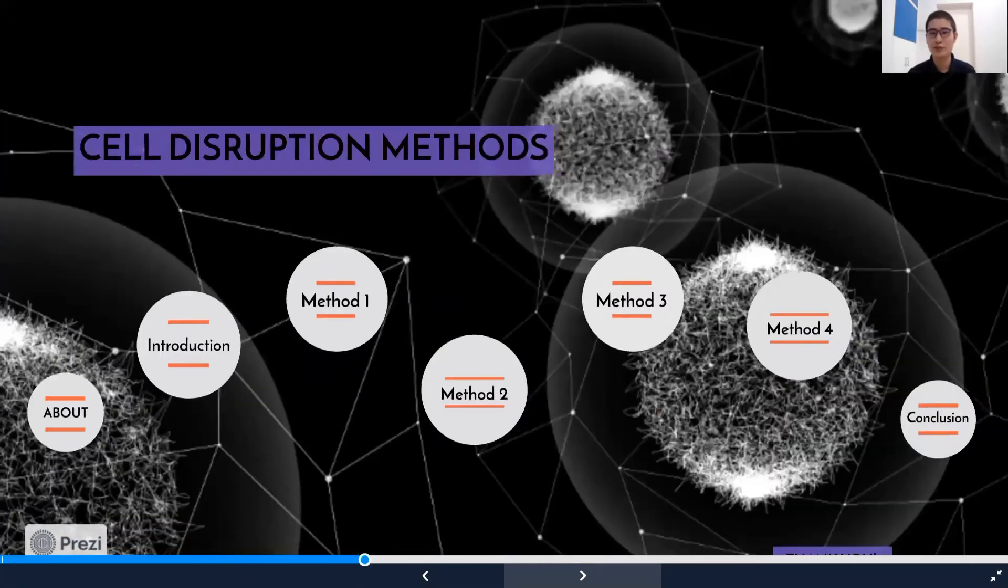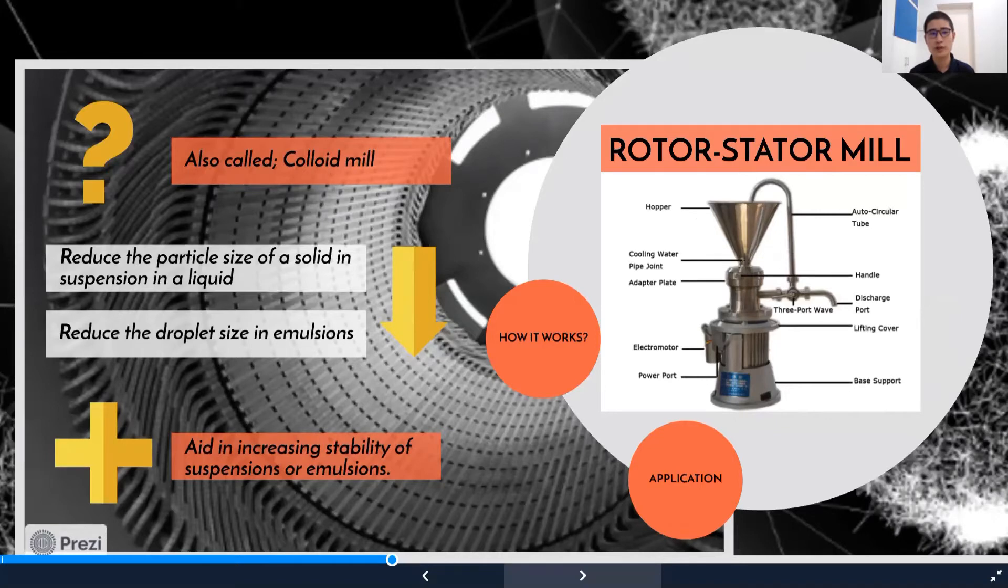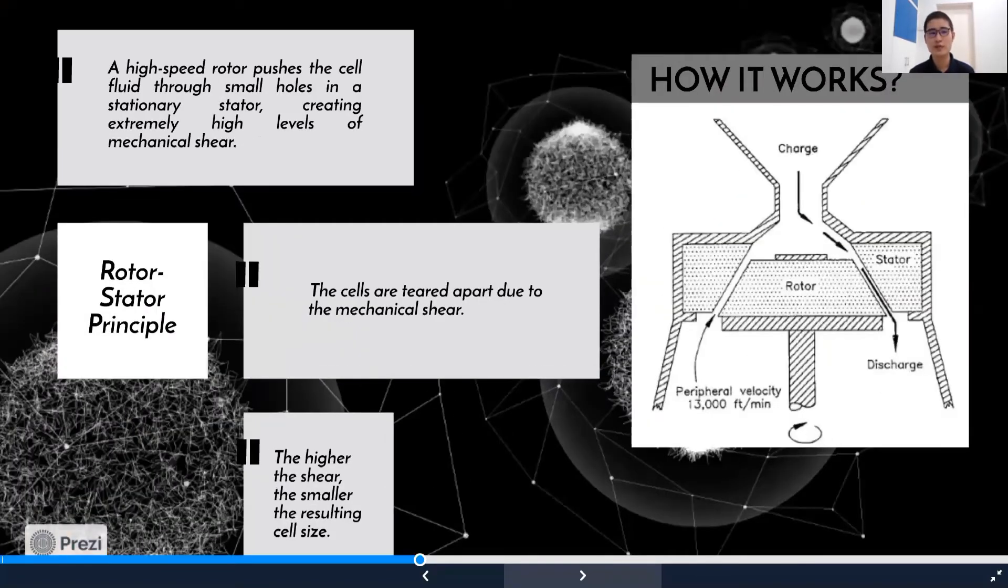The rotor-stator method is also called a colloid mill. It is used to reduce the particle size of solids in suspension in a liquid and to reduce droplet size in emulsions. It aids in increasing stability of suspensions or emulsions too. It is based on the rotor-stator principle. A high-speed rotor pushes the cell through small holes in a stationary stator, creating extremely high levels of mechanical shear. The cells are torn apart due to the mechanical shear. The higher the shear, the smaller the resulting cell size.